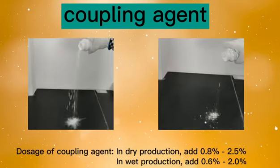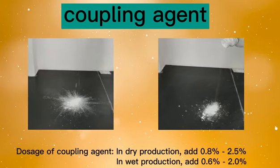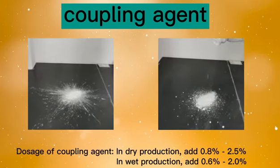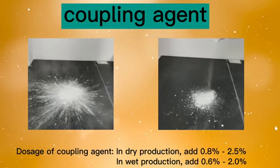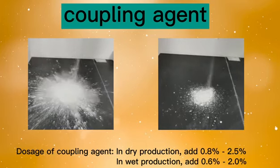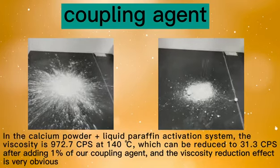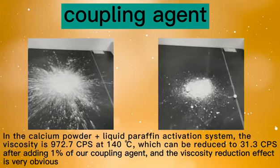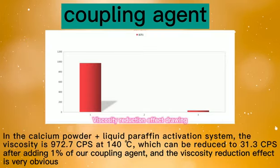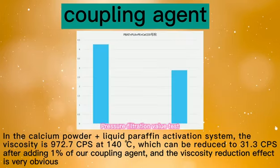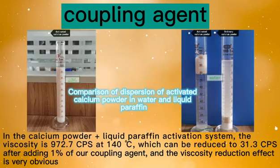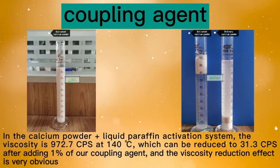Dosage of coupling agent: dry production at 0.8% to 0.5%, wet production at 0.6% to 0.0%. In a calcium powder plus liquid paraffin activation system, the viscosity is 972.7 CPS at 140 degrees Celsius, which can be reduced to 31.3 CPS after adding 1% of the coupling agent, and the viscosity reduction effect is very obvious.